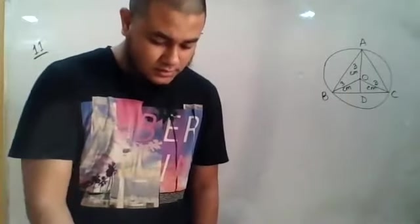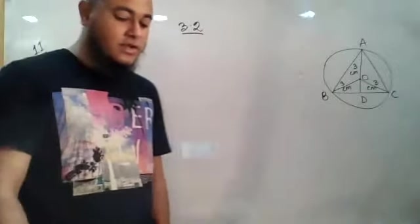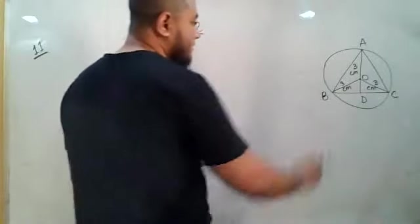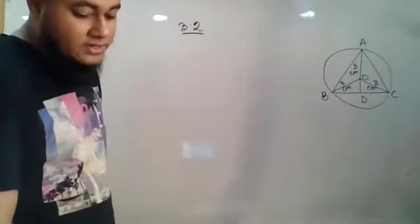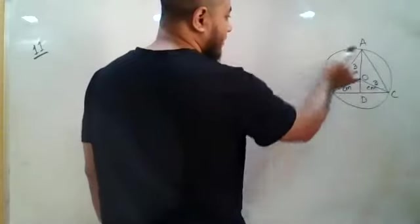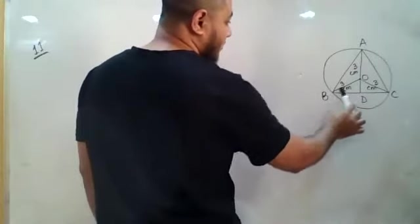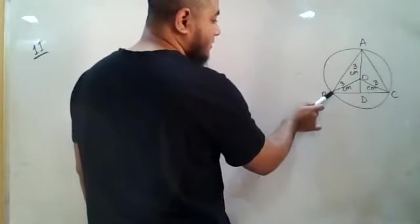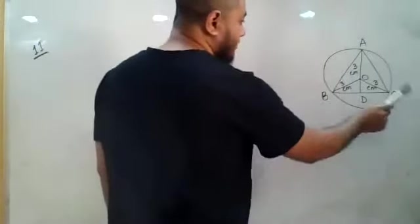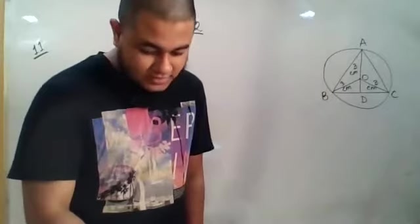Let us start number 11. The radius of the circumcircle of an equilateral triangle — equilateral triangle means all the sides will be equal: AB = BC = AC. The circumcircle is the circle that passes through the three vertices of the triangle. From the center, the distance to one vertex gives you the radius, because the vertex lies on the circle.